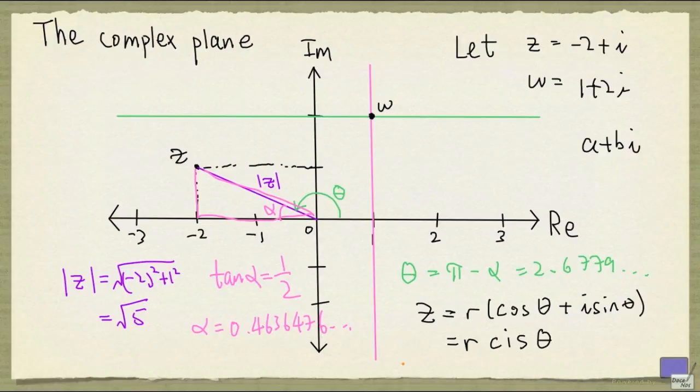And in our case, r is going to be square root of 5, and theta is exactly pi minus arc tangent of 1 half. And if you want to give an approximation, it will be 2.6779.